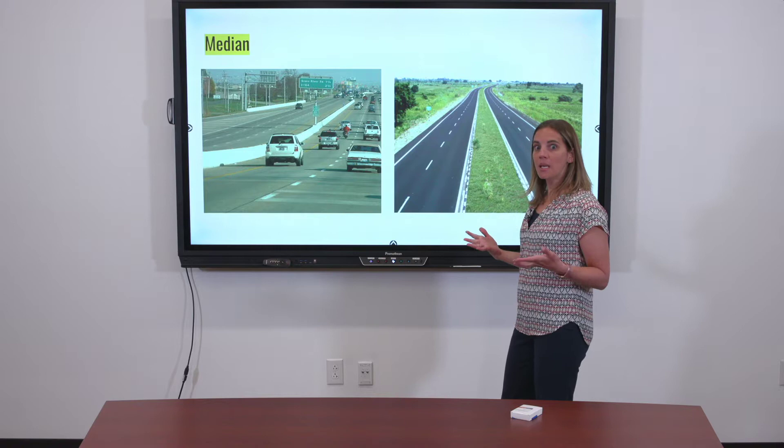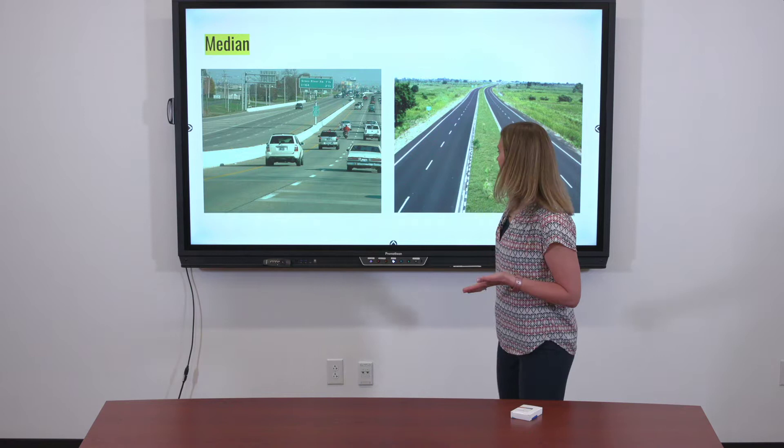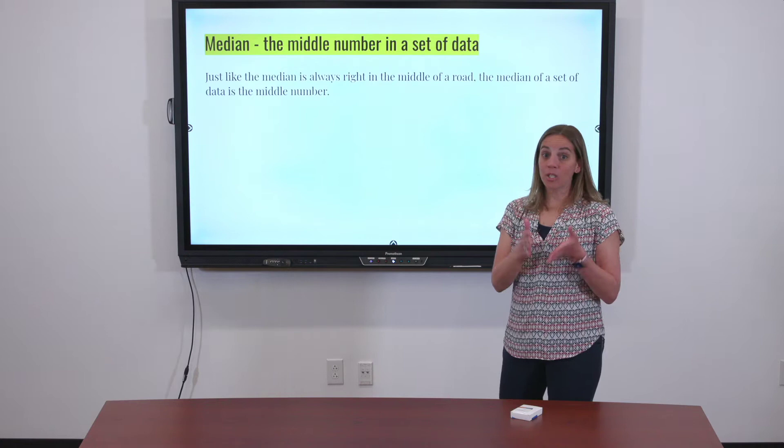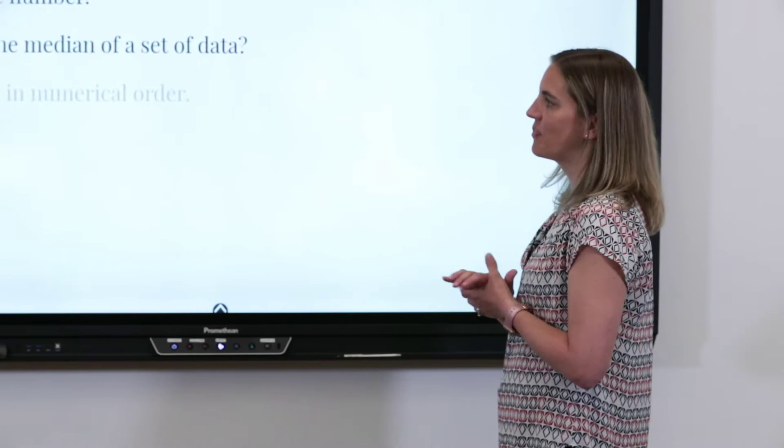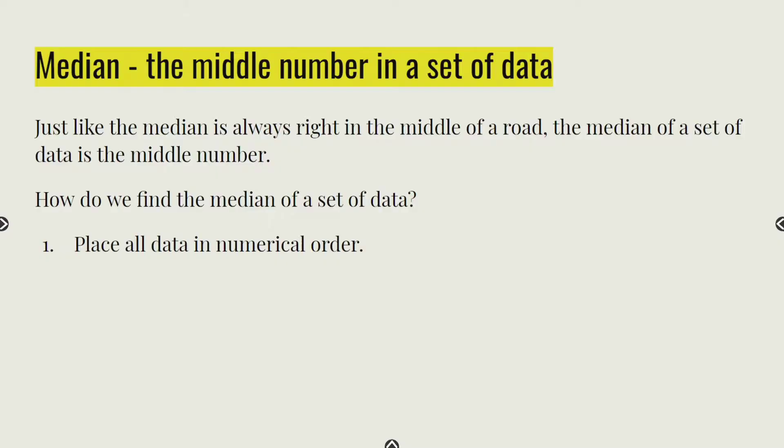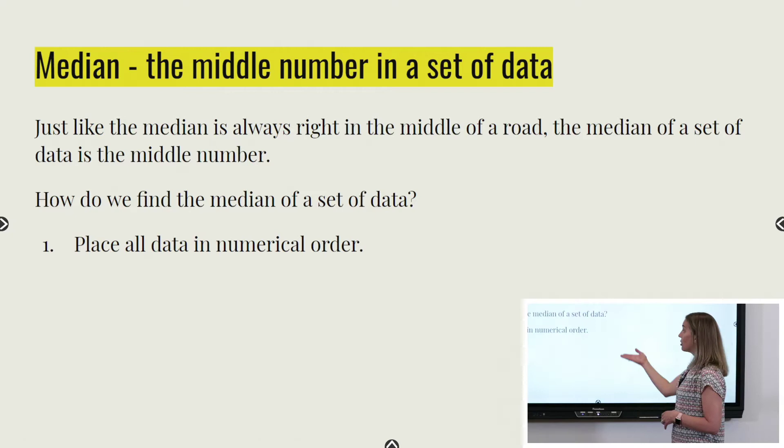Just like the median in a road is always right in the middle, the median in math is the middle number in our data. It's a really neat trick to help you remember. Here are the steps for finding the median. It starts exactly like when you find the mean — you're going to start by taking all of your data and putting it in order from least to greatest.